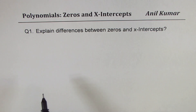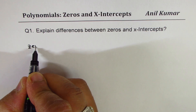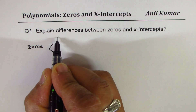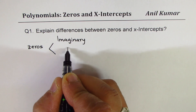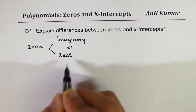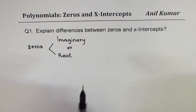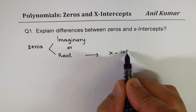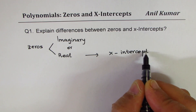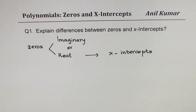Now let me explain: zeros could be imaginary or real. The real zeros are actually treated as x-intercepts. So real zeros are actually treated as x-intercepts. I hope that clearly says everything about zeros and x-intercepts, but there's something more to it.